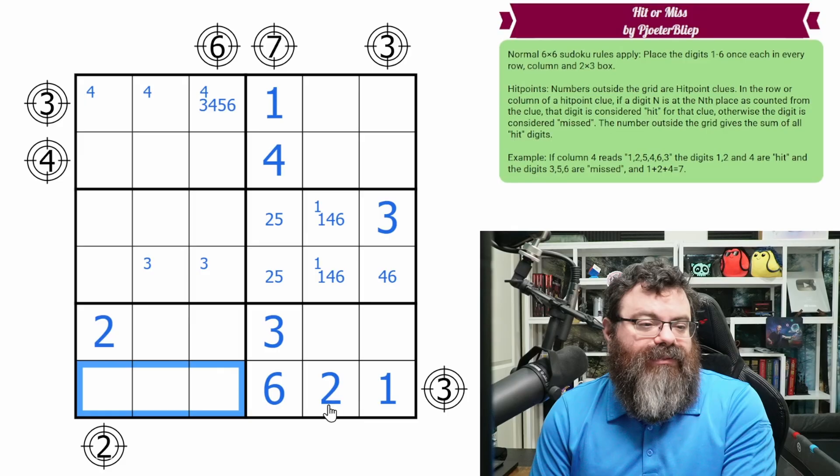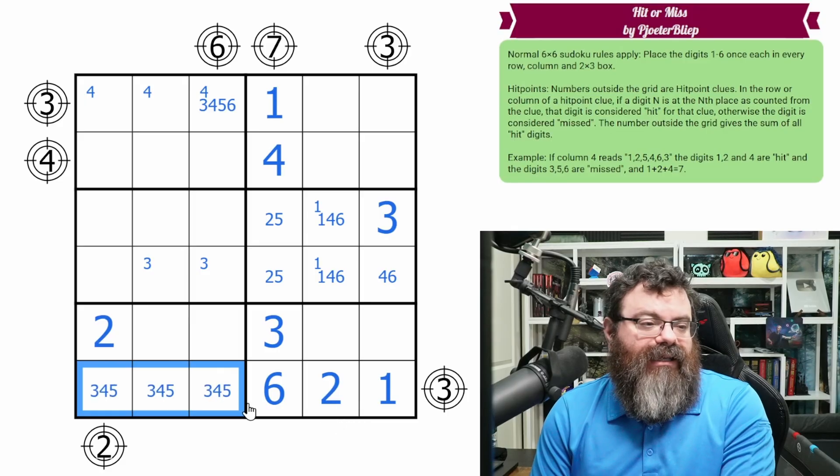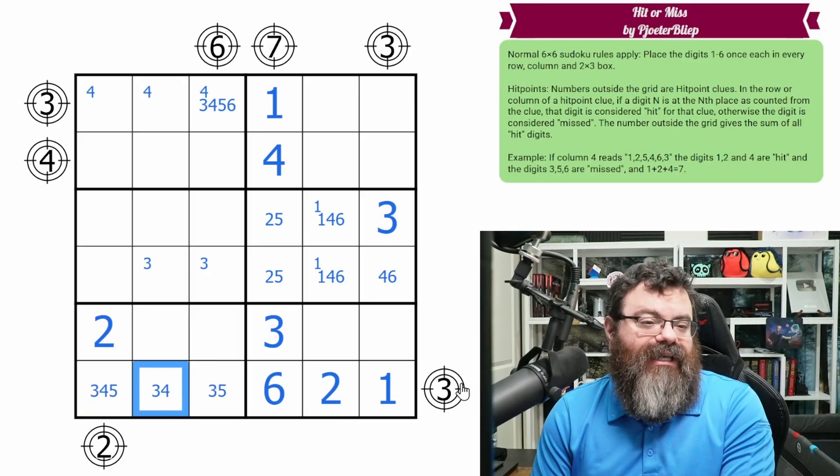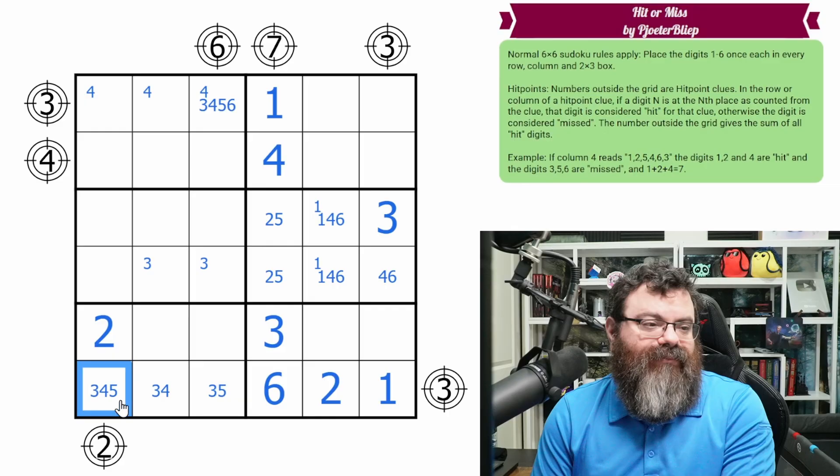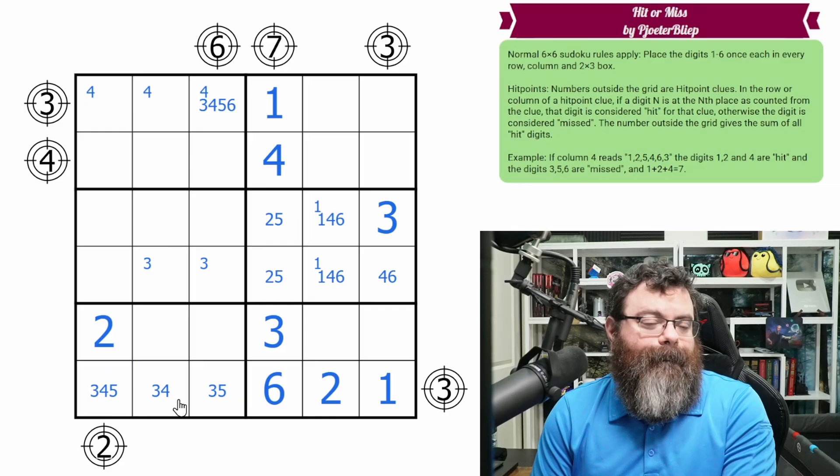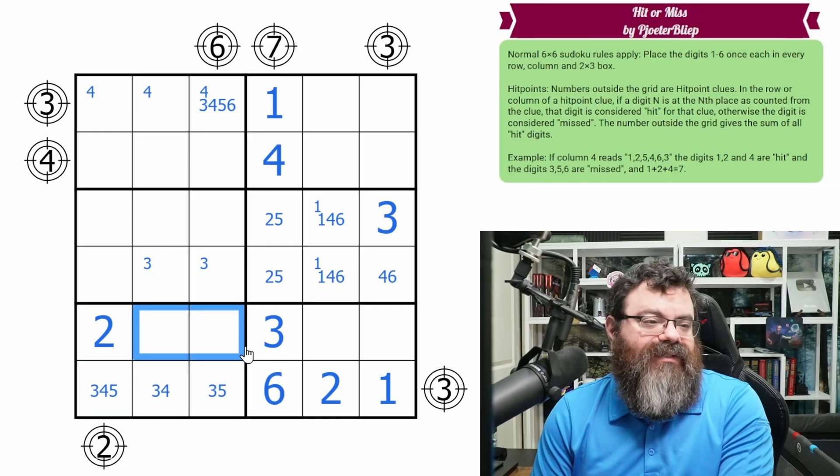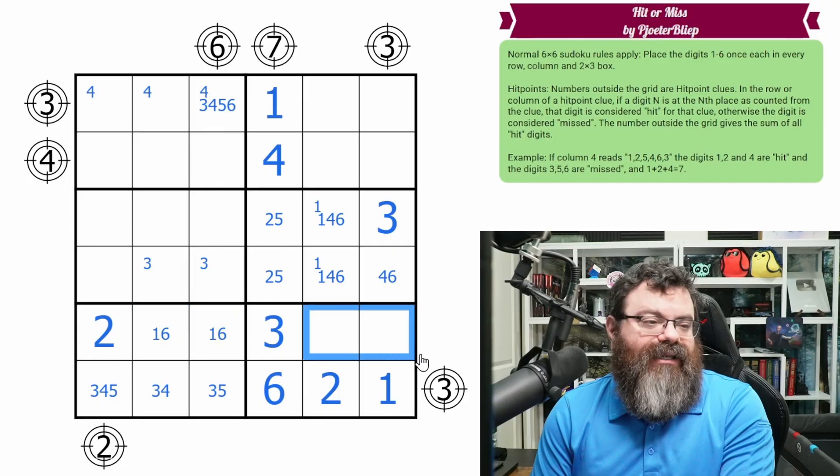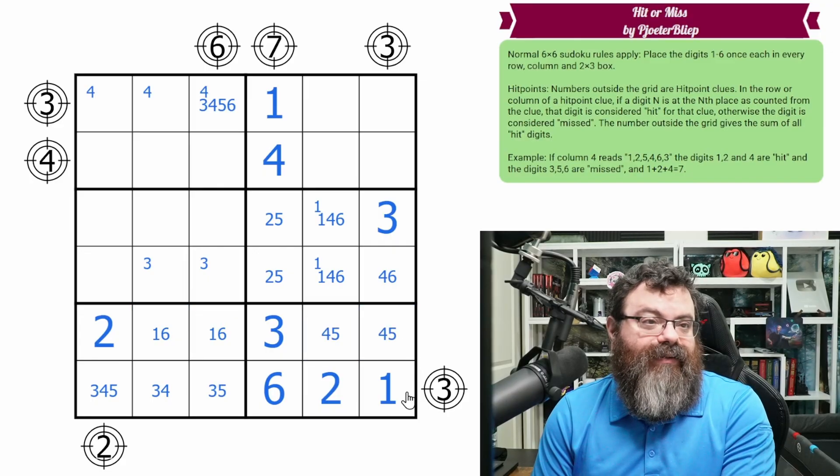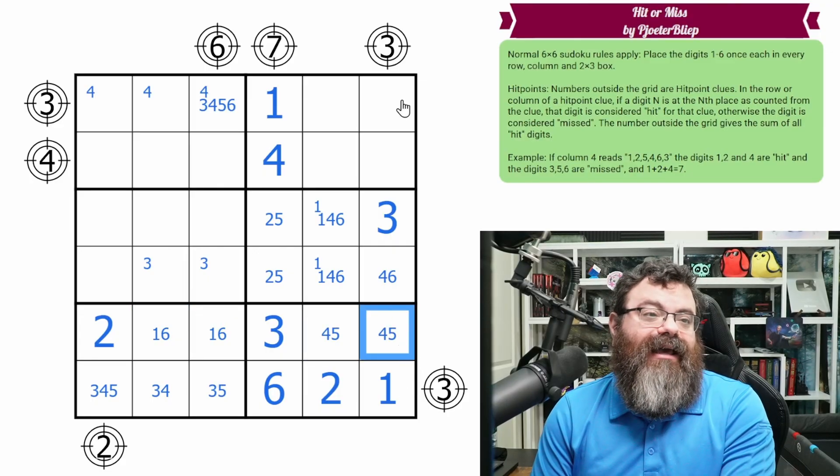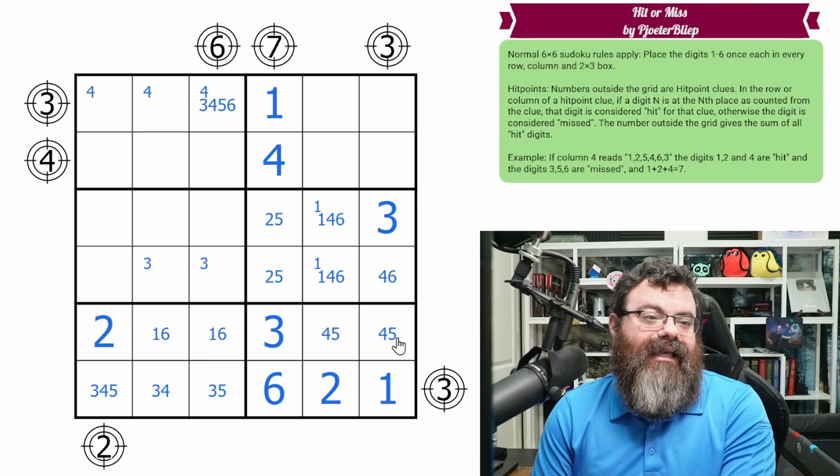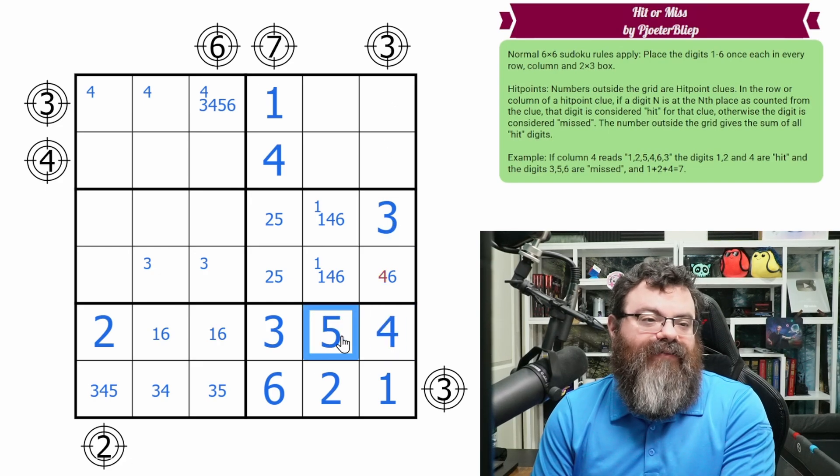This is a triple - three, four, five. This can't be four and this can't be five, those would be hits on this three. So if this is three, four, five, this is one, six. And down here, this is four, five. Okay, this can't be a five because I can only hit the three. So this is five away from that three, so this is four, this is five, this is six.